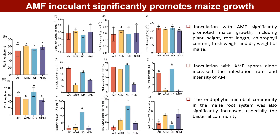The results showed that maize growth traits under different treatments exhibited significant variability. Compared with the un-inoculated control, inoculation with AMF significantly promoted maize growth, especially with the artificially air-dried and medium-carrying AMF. In addition, inoculation with AMF spores alone increased the infestation rate and intensity of AMF.